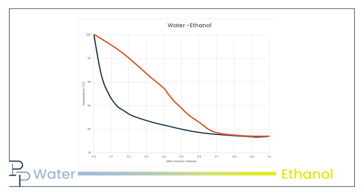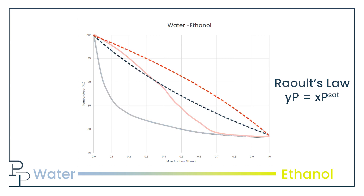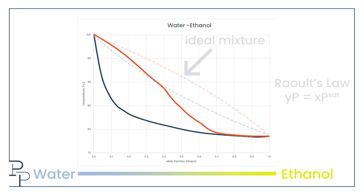If the water-ethanol system behaved itself, we could generate these curves theoretically using Raoult's law. But if we apply Raoult's law to the water-ethanol system, the curves we get look nothing like the actual lab data. If it did follow Raoult's law, we would say the mixture is ideal. Water and ethanol do not form an ideal mixture.